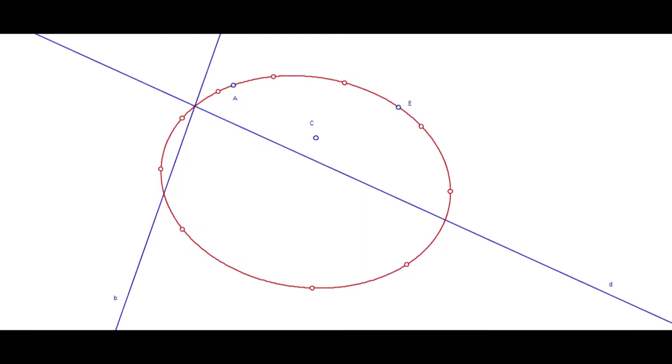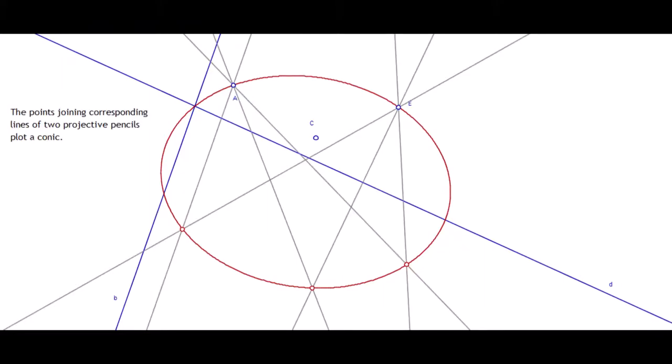In anthroposophical terms, the spirits of movement precede the spirits of form. This curve has harmonious proportions. Metrical lawfulness arises out of freely chosen beginnings, as we have seen elsewhere. It is known in projective morphology as a curve of the second order — the straight line being the first order — and turns out to be a conic section. In other words, the points joining corresponding lines of two projective pencils, in this case A and E, plot a conic.